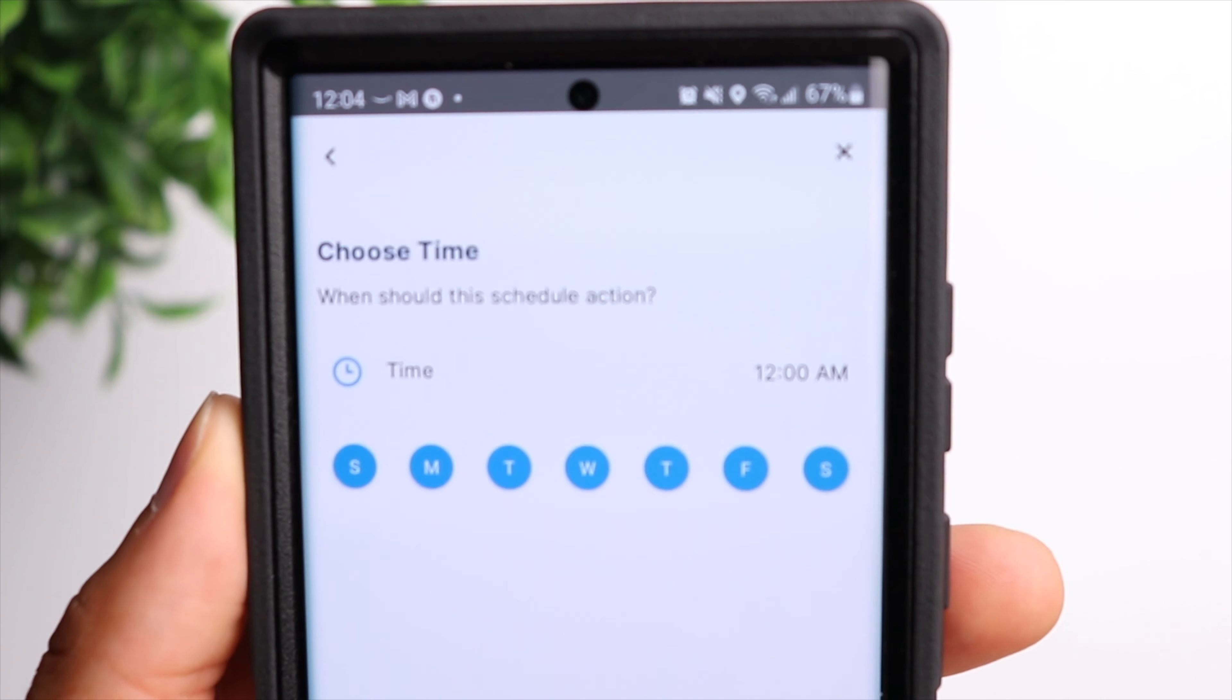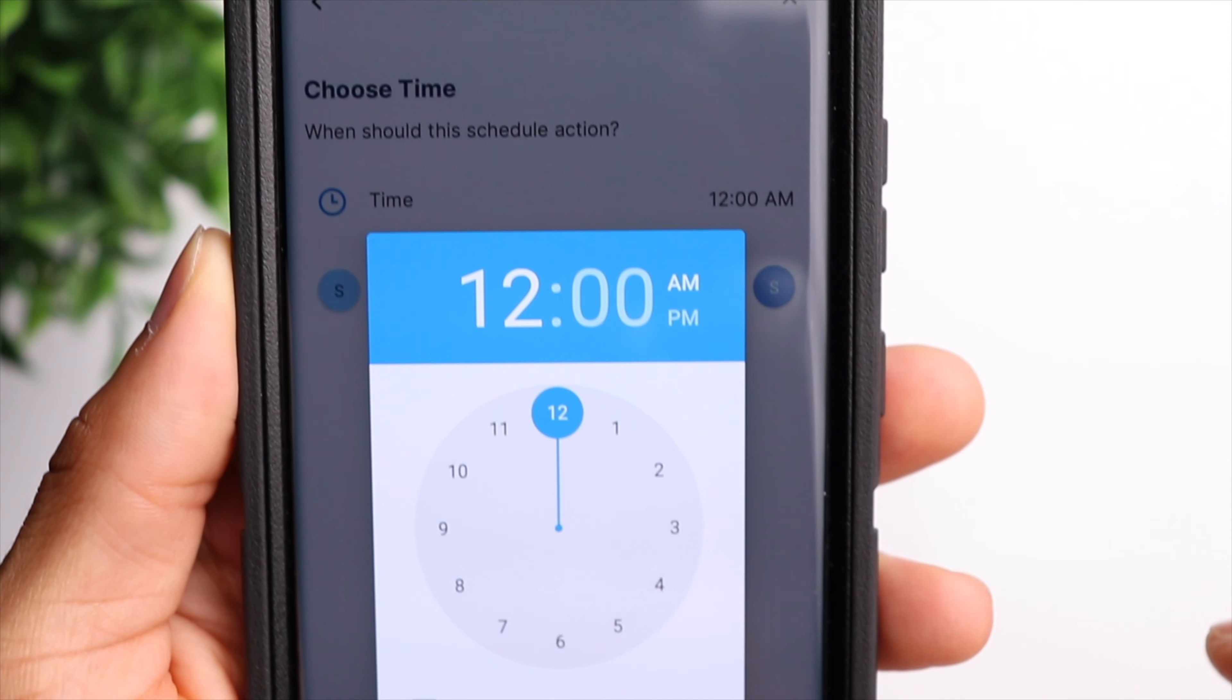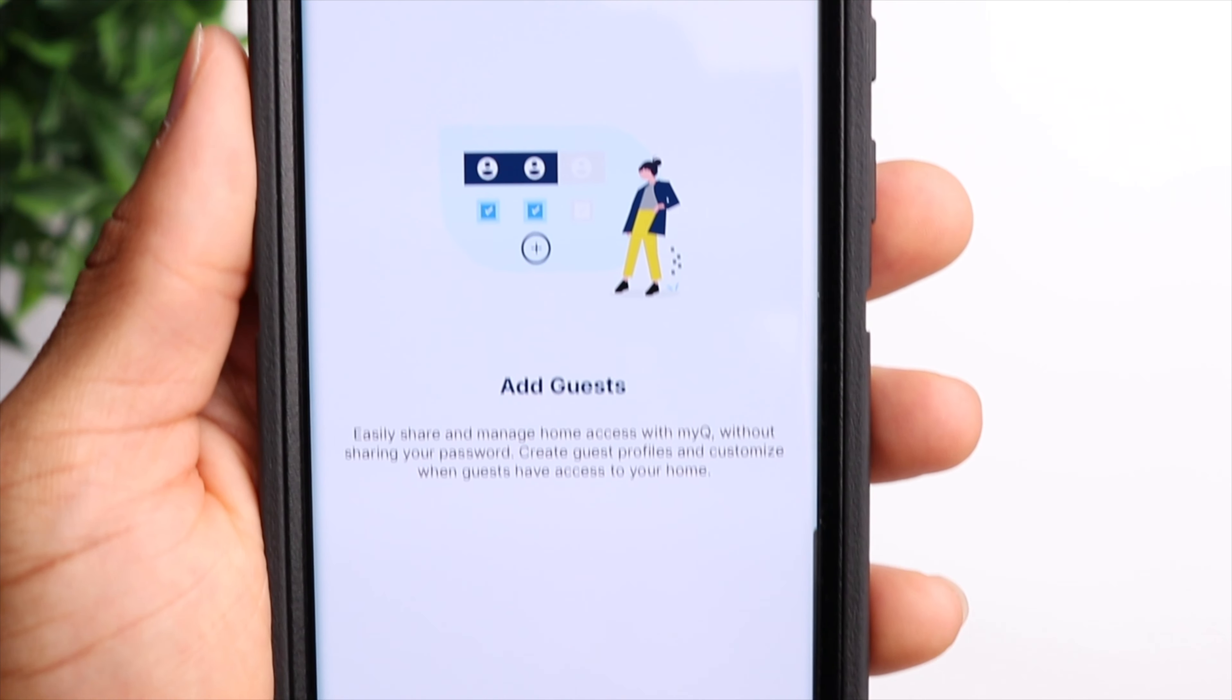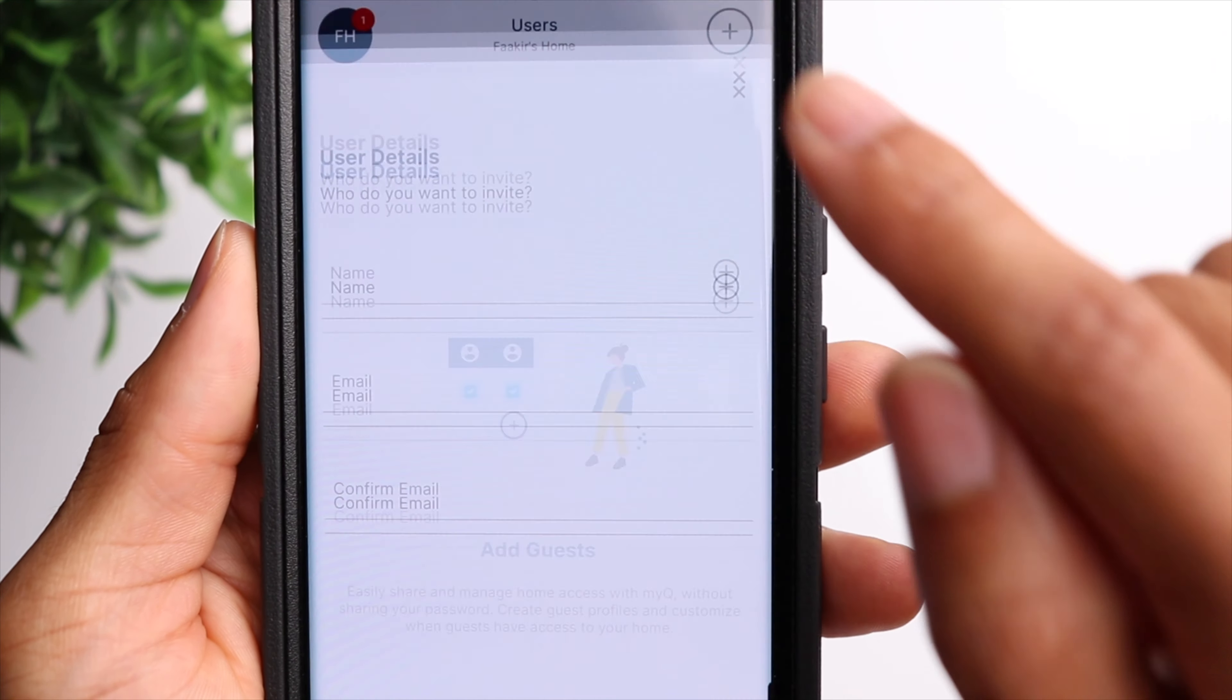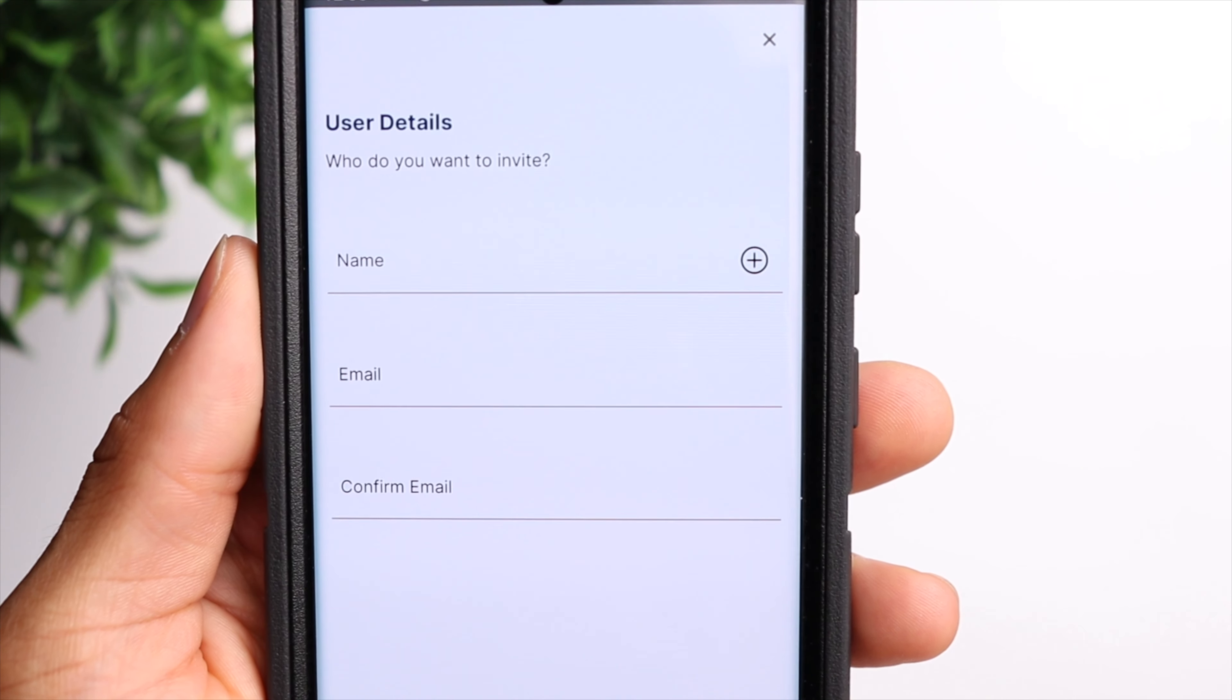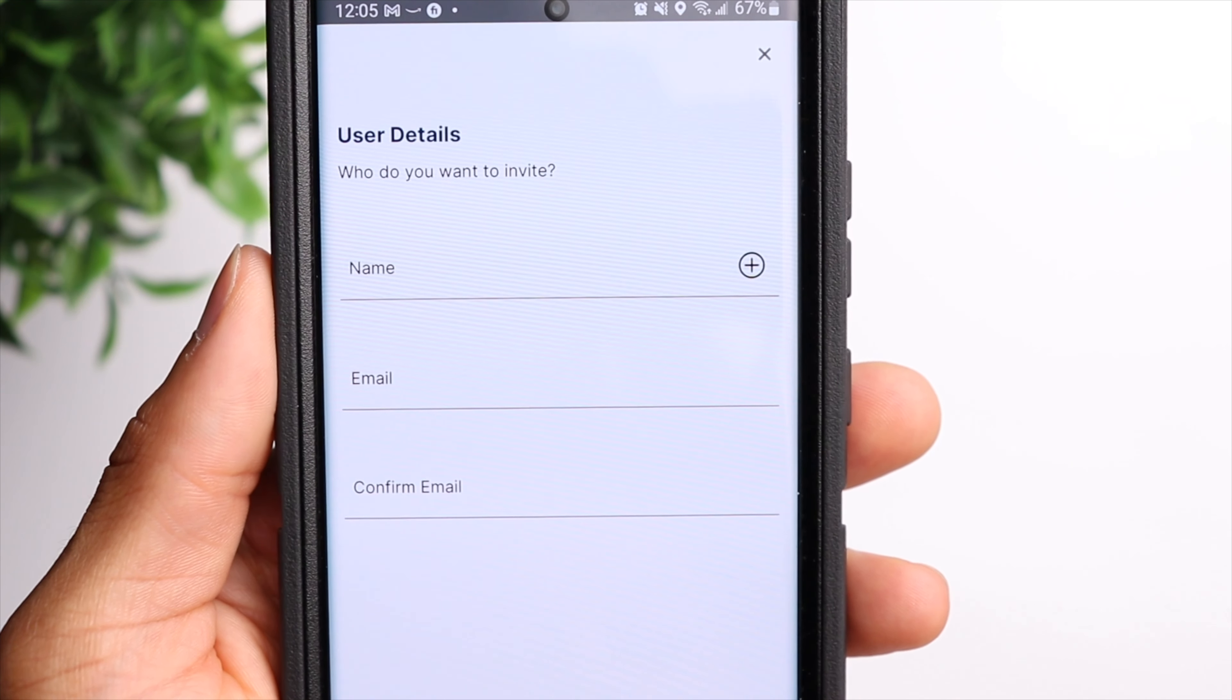And again, if you're that person that often forgets to close the garage, you can also set a schedule so that the garage will close on certain days at certain times. And then you can even give other people access to open and close the garage for a designated amount of time. So this is great for things like having family in town. You can give them access within the app for a certain number of days. And this way you don't have to share your passwords or give out any physical keys to your home.